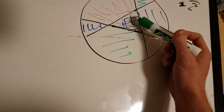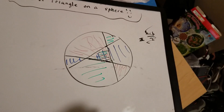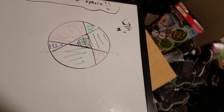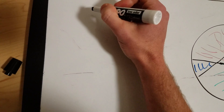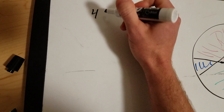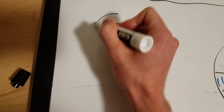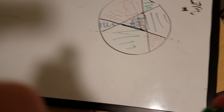You can see that the area of these three lune pairs covers the entire sphere. The area of a sphere — from back in high school or middle school — is 4πr².